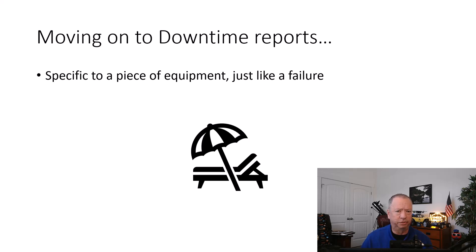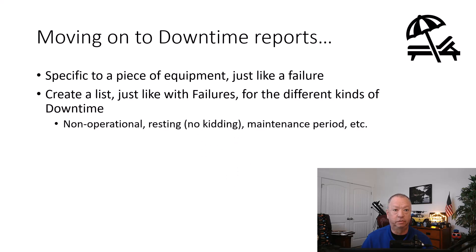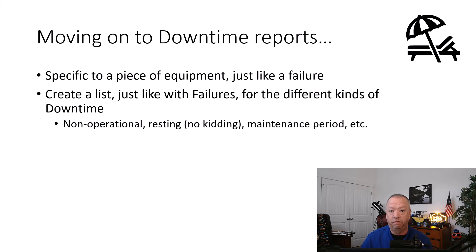Downtime reports are a little different and can be a little more involved. Keep in mind they don't need to be associated with a failure. Be sure they also start with selecting a specific piece of equipment that experienced the downtime — use that same list that you did for failures. Then define a list of what kinds of downtime could exist. This could be a very short list: non-operational, resting, maintenance period, that sort of thing. This is a way of classifying the downtime for future analysis. Again, downtime reports do not have to be associated with failures.